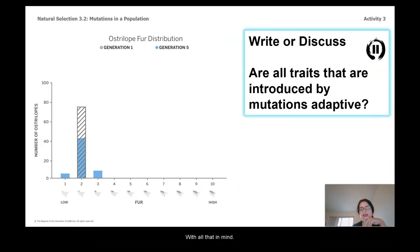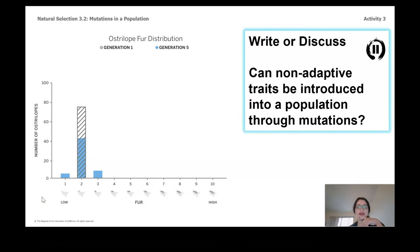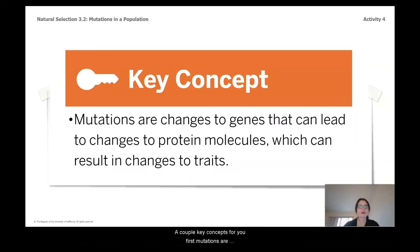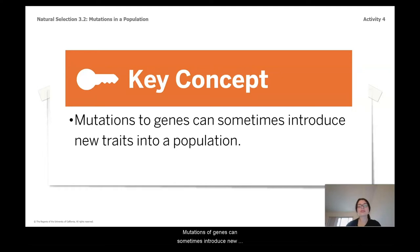With all that in mind: are all traits introduced by a mutation adaptive? No. Can non-adaptive traits be introduced to a population through mutations? Yes. Key concept one: mutations are changes to genes that can lead to changes to the protein molecules, which can result in changes to traits. Key concept two: mutations of genes can sometimes introduce new traits into a population.